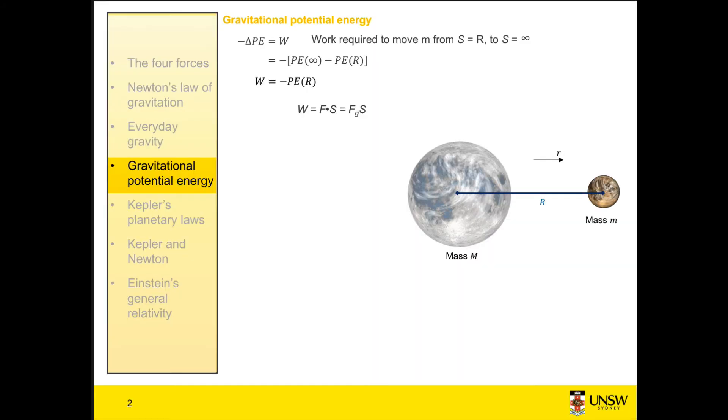then we can say that the work done is equal to that force times the displacement. But here we want to know the potential energy of an object at some distance r in the gravitational field.